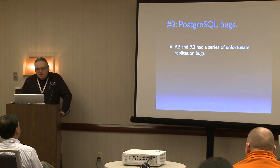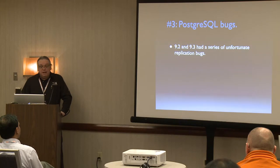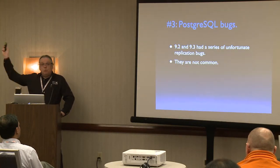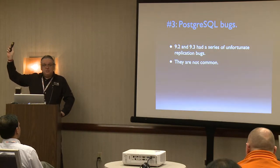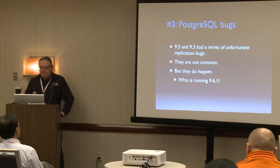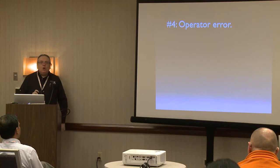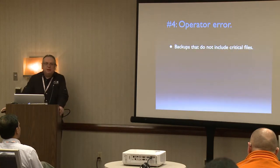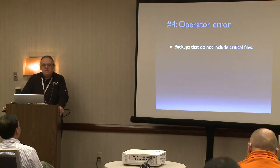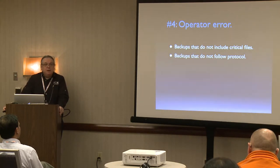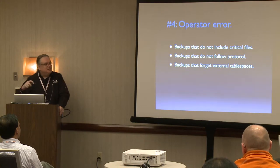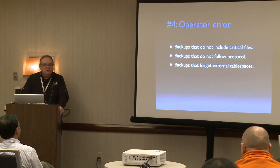Sadly, Postgres does have bugs. 9.2 and 9.3 had a series of unfortunate replication bugs. If you're on RDS running 9.6, you're on 9.6.1, which has an index corruption bug. There's also operator error: backups that excluded critical files — for example, an rsync with --exclude='*log*' that misses pg_xlog and pg_clog. It's amazing how many backups just forgot external tablespaces — this is one reason I tell people don't use tablespaces in Postgres unless you must, because they greatly increase the number of places things can go wrong.